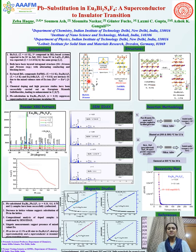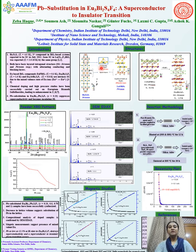Both these compounds contain layered tetragonal structures in which the conducting BiS2 layer alternates with the blocking layer. The conducting BiS2 layers form a square pyramid with a rock-salt type arrangement, and the blocking layers have a fluorite type structure.